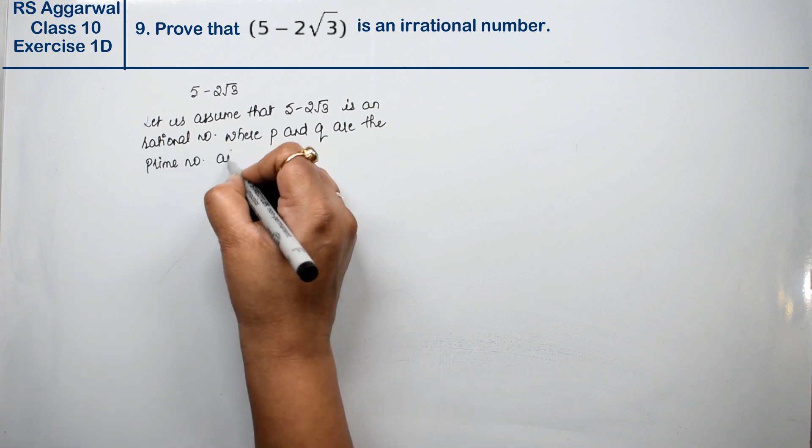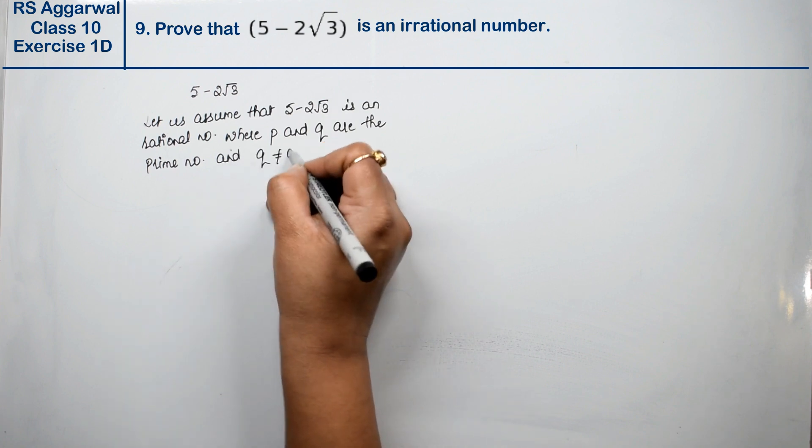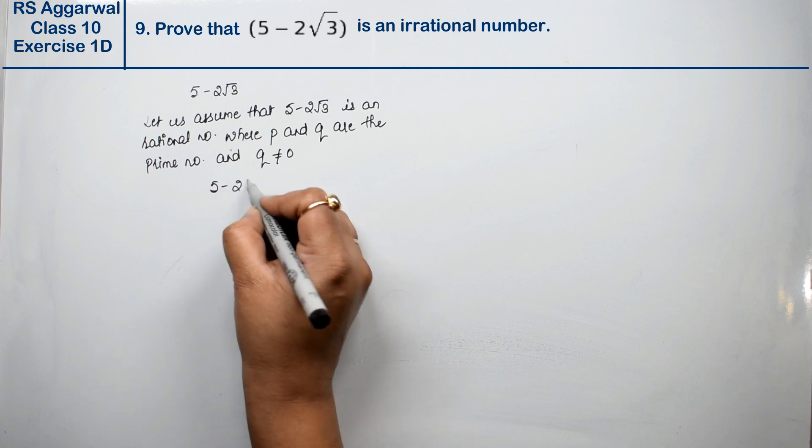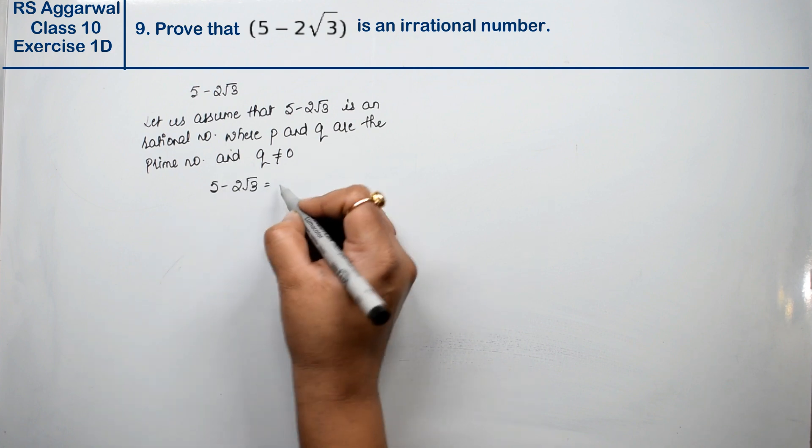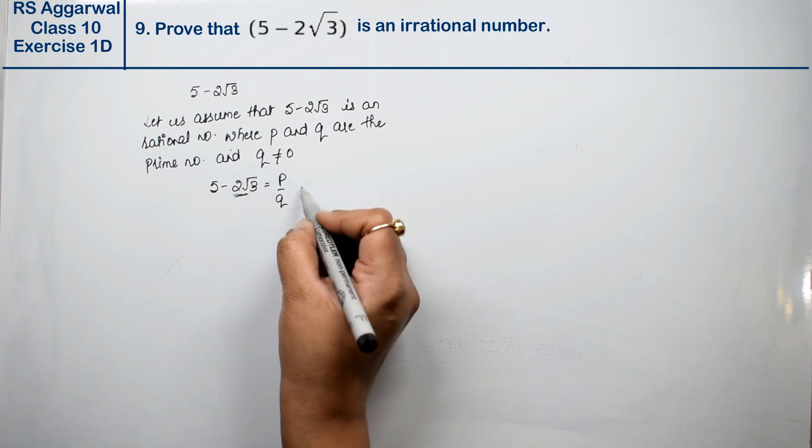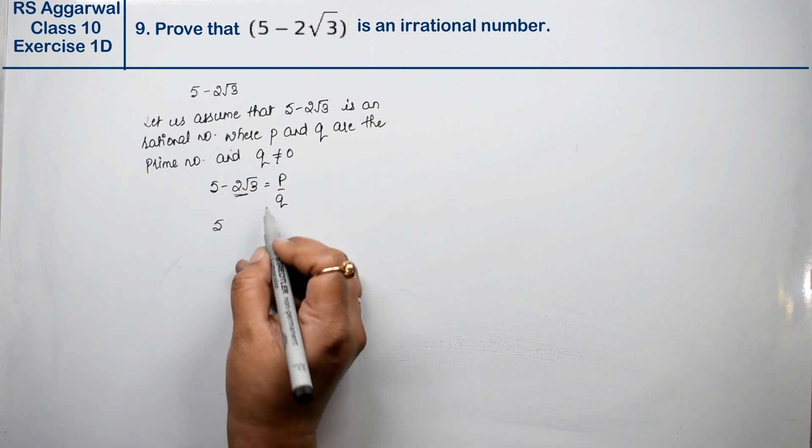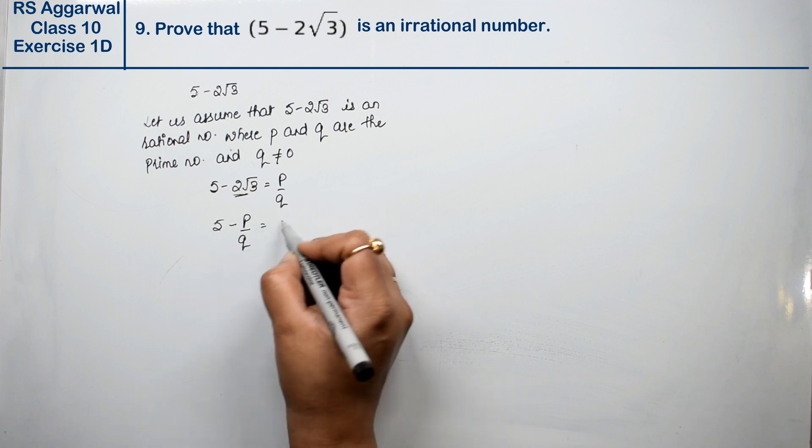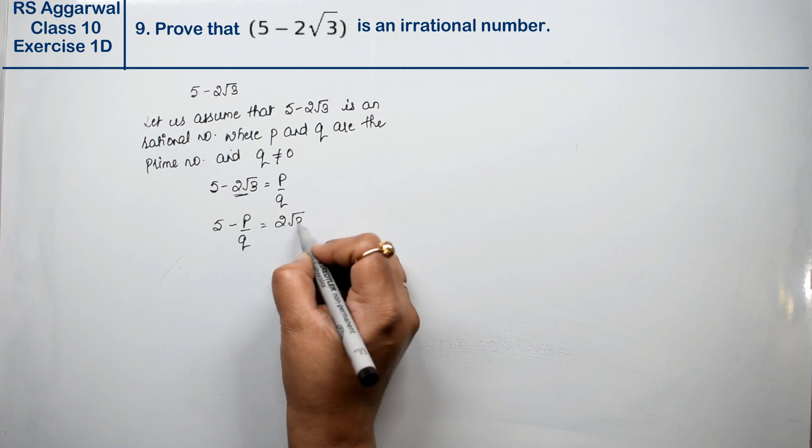And Q is not equals to 0. So we said 5 minus 2 root 3 equals to P upon Q form. Now to make this value positive, we rearrange the terms. So 5 was plus, it becomes minus when moved. And 2 root 3 becomes plus.